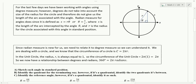Since radian measure is new for us, we need to relate it to degrees to be able to convert back and forth. We're dealing with the circle, and we know the circumference of a circle is 2πR. In the unit circle, the radius is always equal to 1, so the circumference is just 2π. This gives us the relationship: 360 degrees equals 2π radians. If you cut both sides in half, here's the one I like to use: 180 degrees equals π radians.